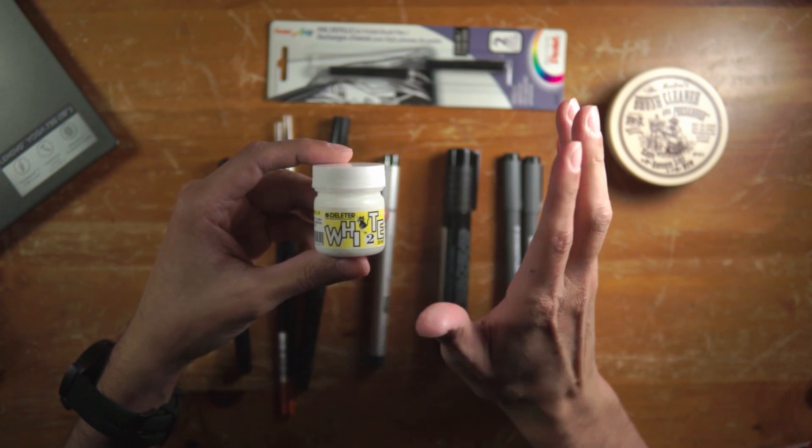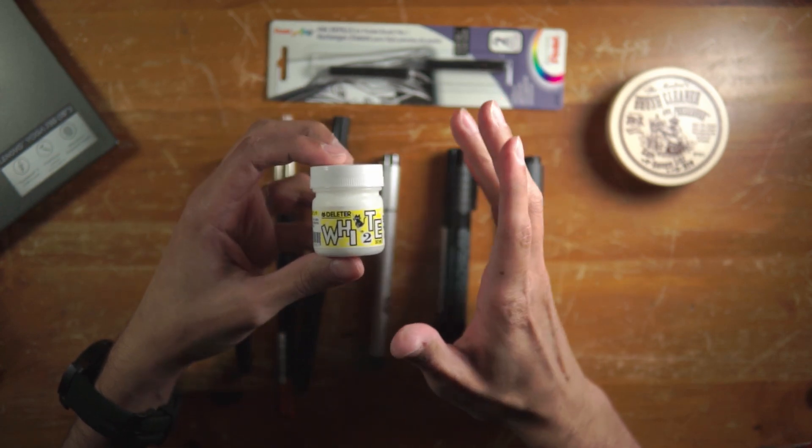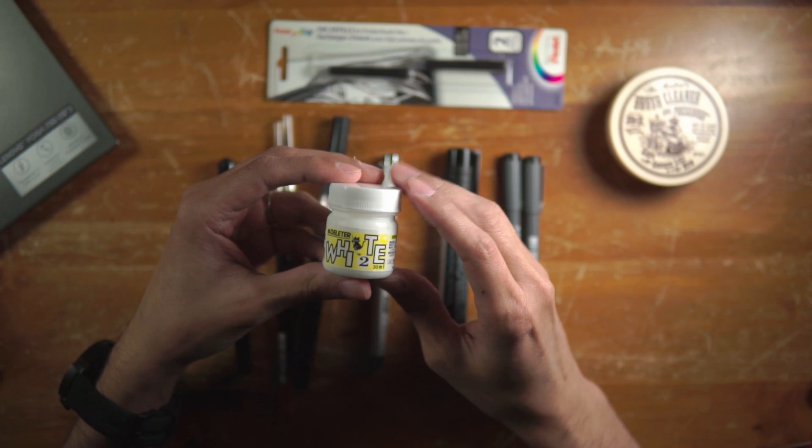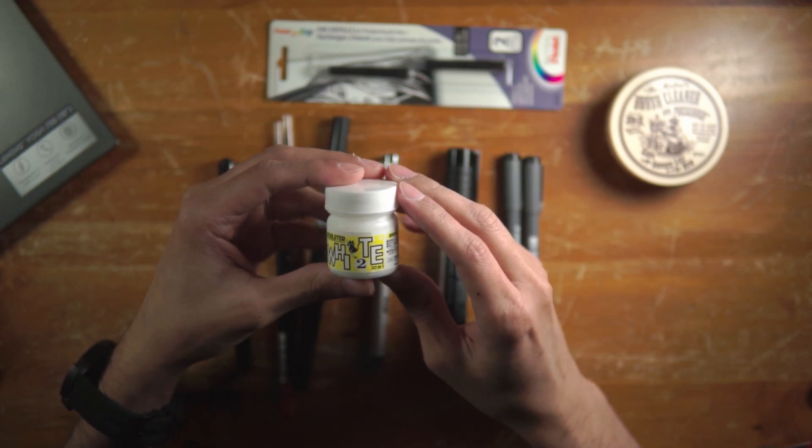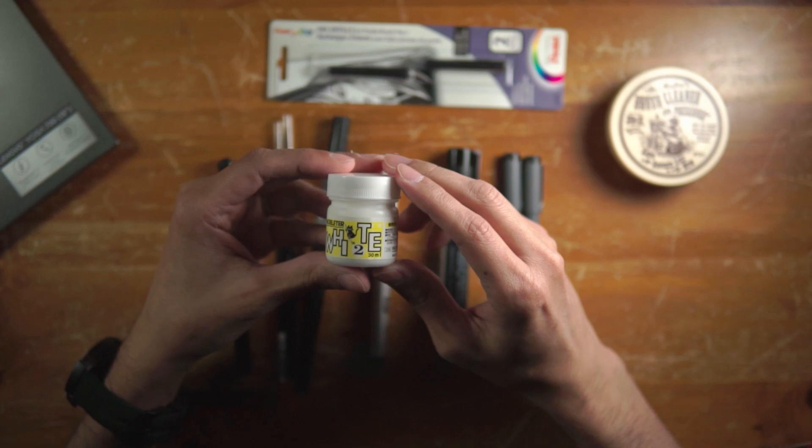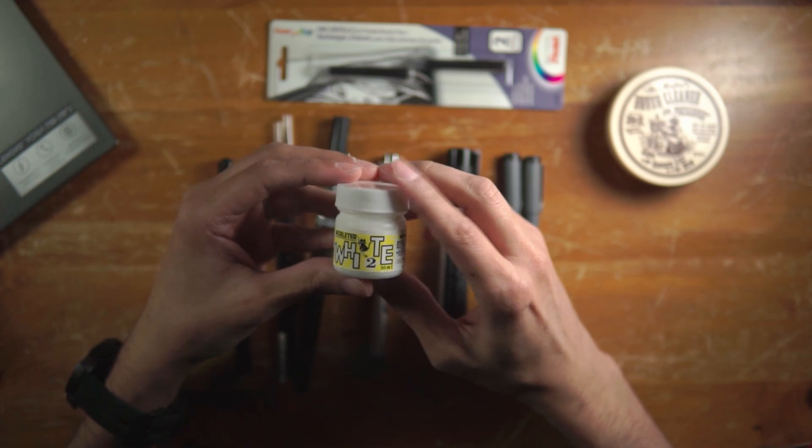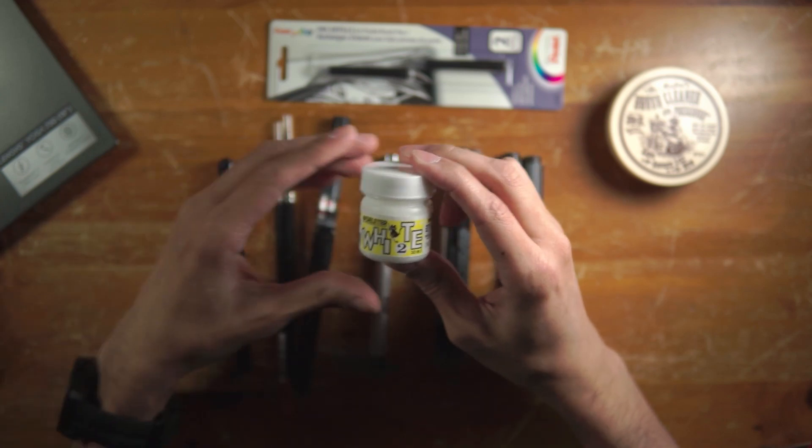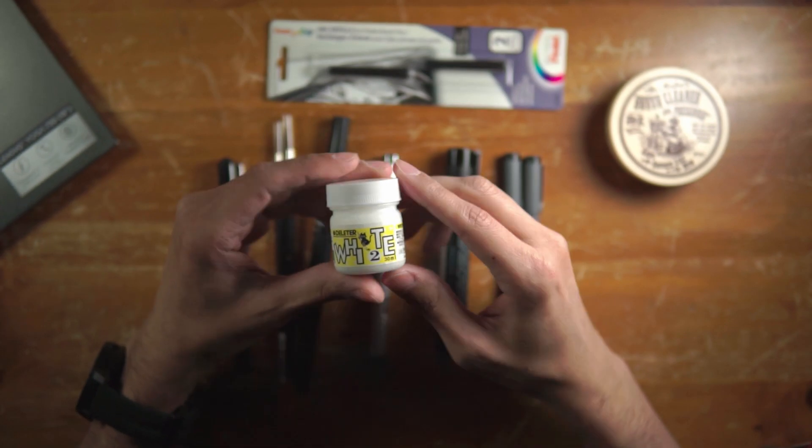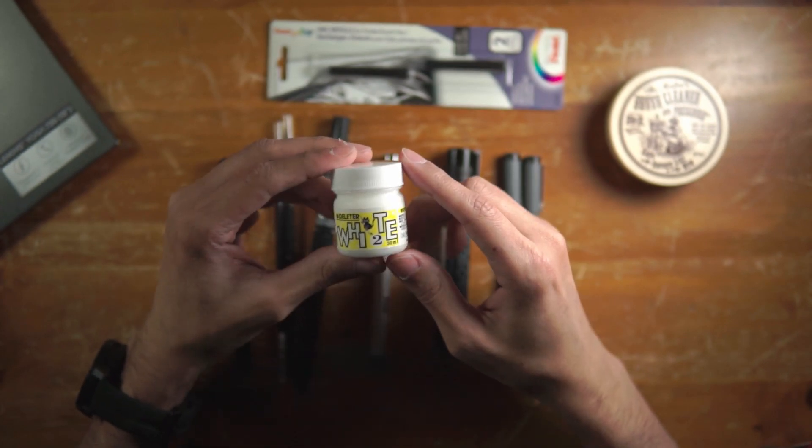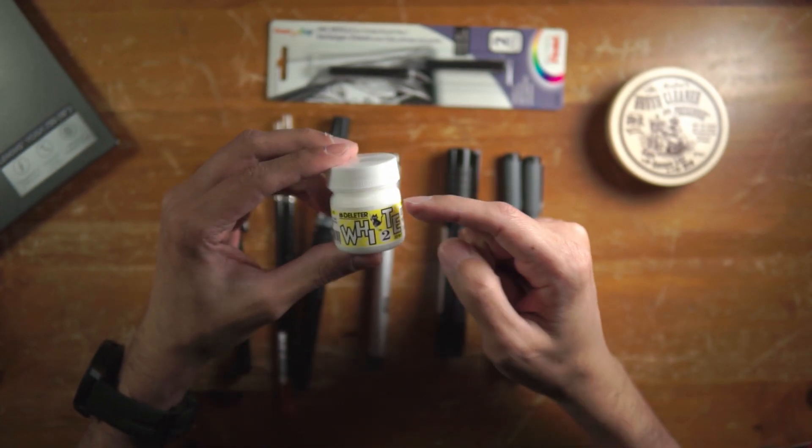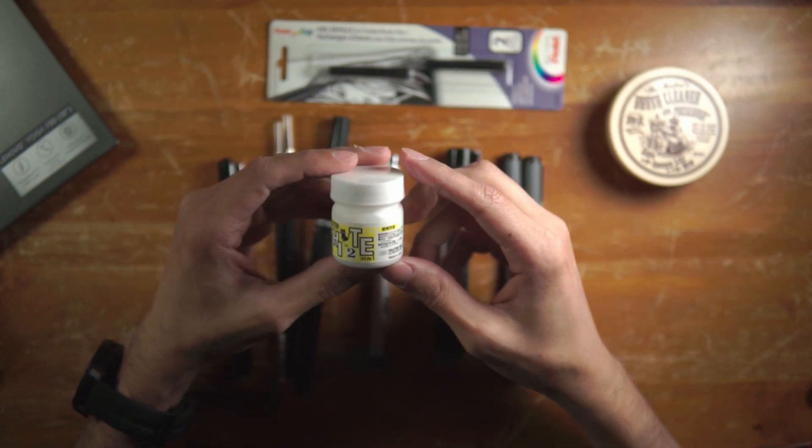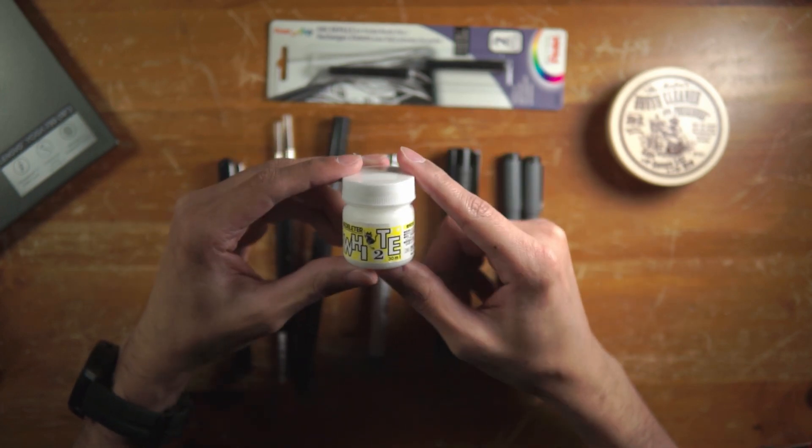And I need to stress that JetPens is not sponsoring this video, but I do want to mention them because they're really great. I love shopping at their website all the time. I got this at JetPens and you can get this at JetPens.com. They should have them there. And again, it's the Deleter White 2 and it's really great, highly recommended to correct your mistakes but also to do some white on black effects.